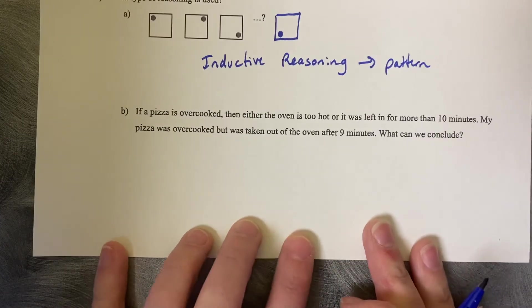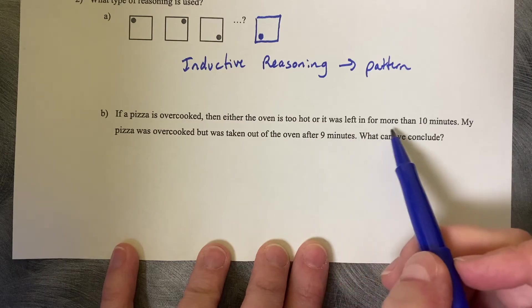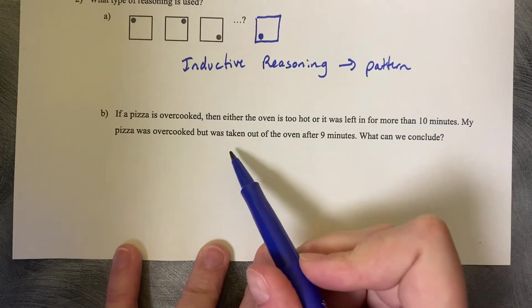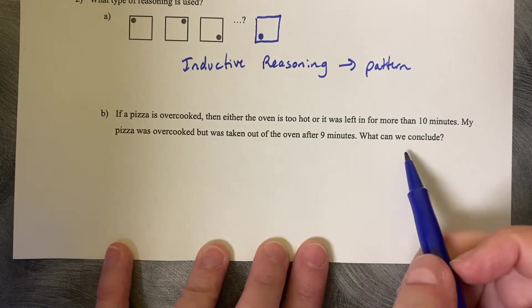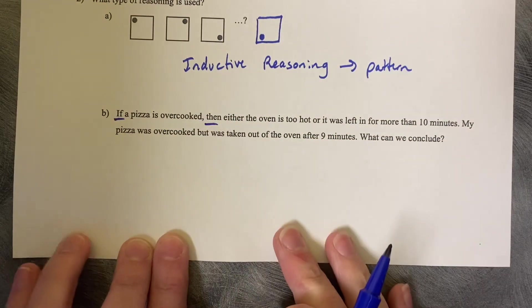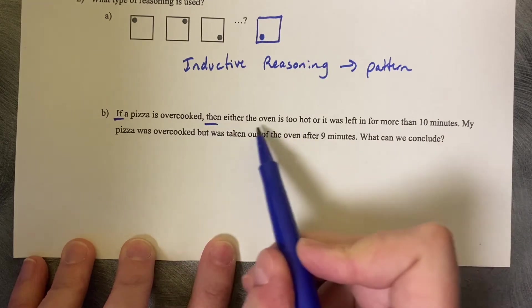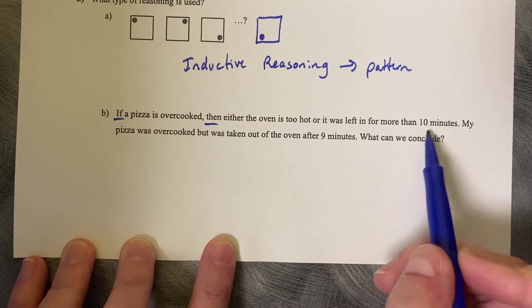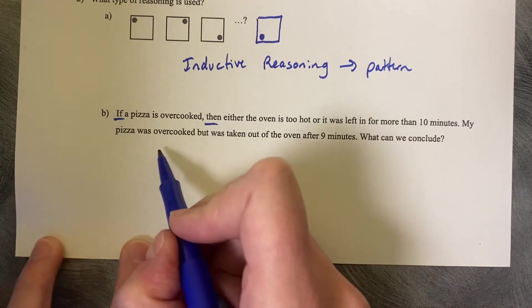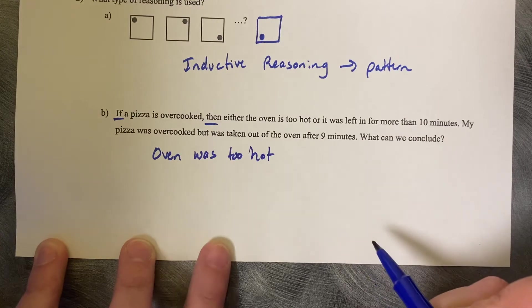All right, how about the next one? If a pizza is overcooked, then either the oven is too hot or it was left in for more than 10 minutes. My pizza was overcooked, but it was taken out of the oven at 9 minutes. What can we conclude? Well, if we look back up at this conditional statement, an if-then statement, I can see that if the pizza is overcooked, then either the oven is too hot or it was left in for more than 10 minutes, which I know the 10 minutes part is not true. So it must be that the oven was too hot.